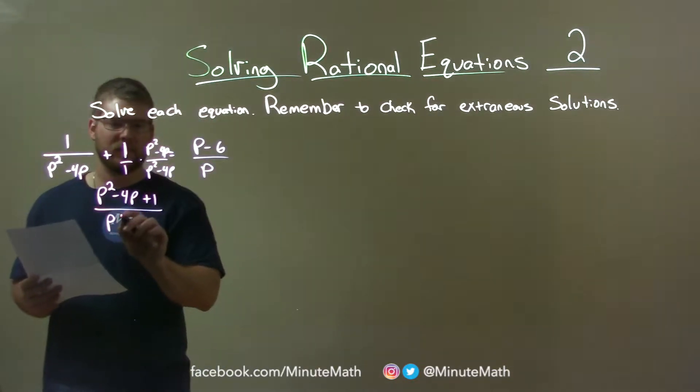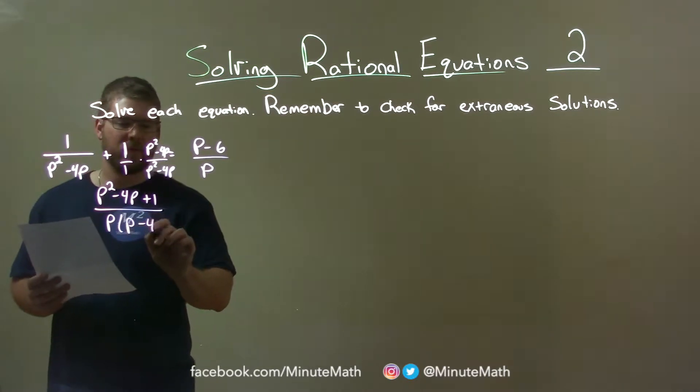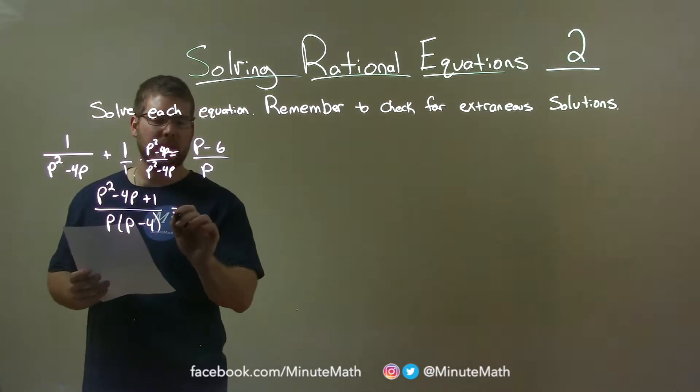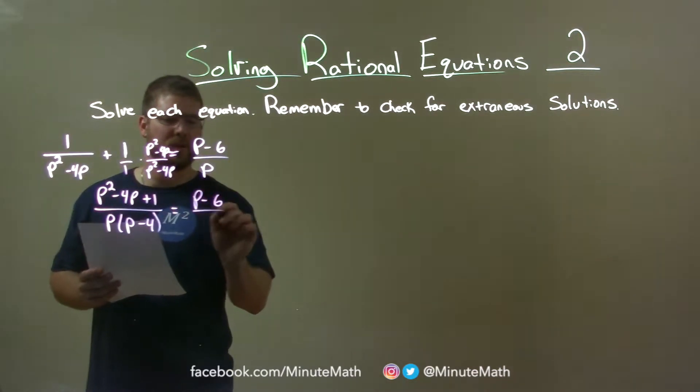Now the denominator is p squared minus 4p. I'm going to pull out a p there. So p minus 4 or p times p minus 4. Same thing, but it'll help us in a minute. Equals p minus 6 over p.